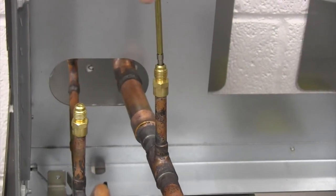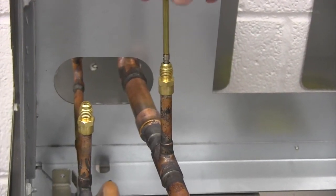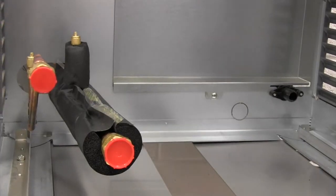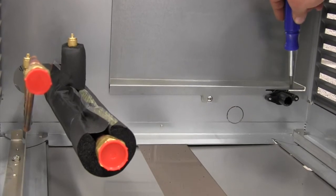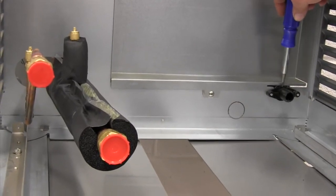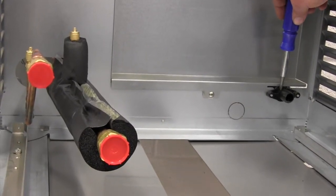After you're done soldering and everything's cooled down you can go ahead and put your Schrader cores back in. We reinstalled the rear panel with these two stainless steel Phillips head screws. Note there is a notch on the bottom side that goes around this drain fitting.